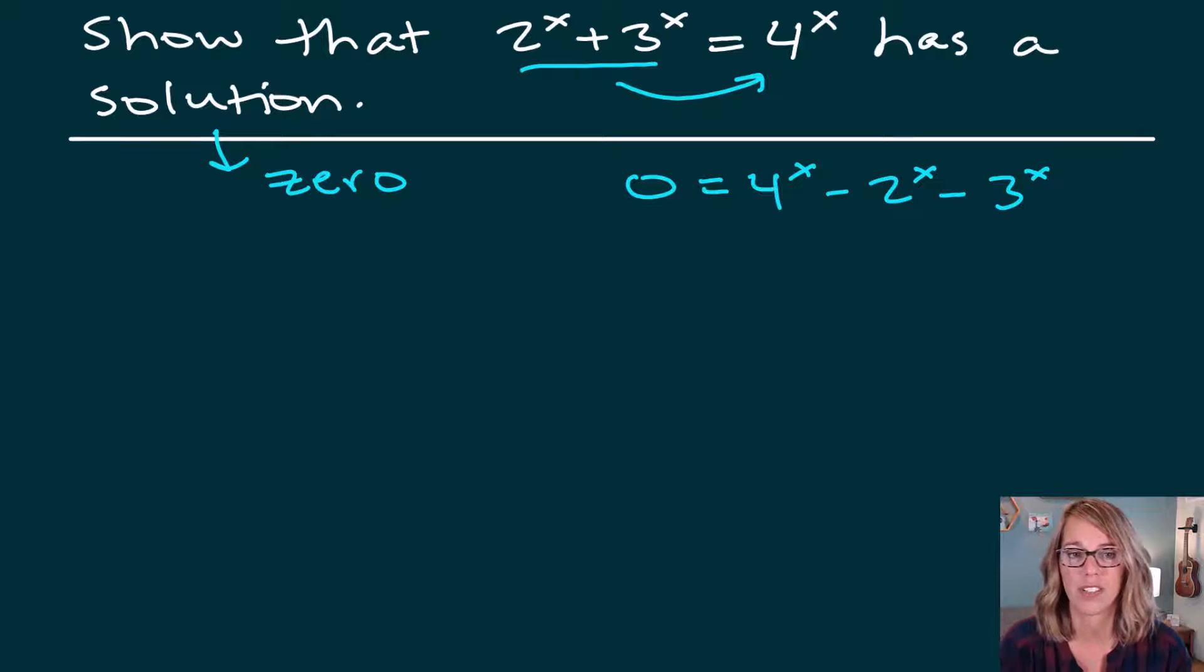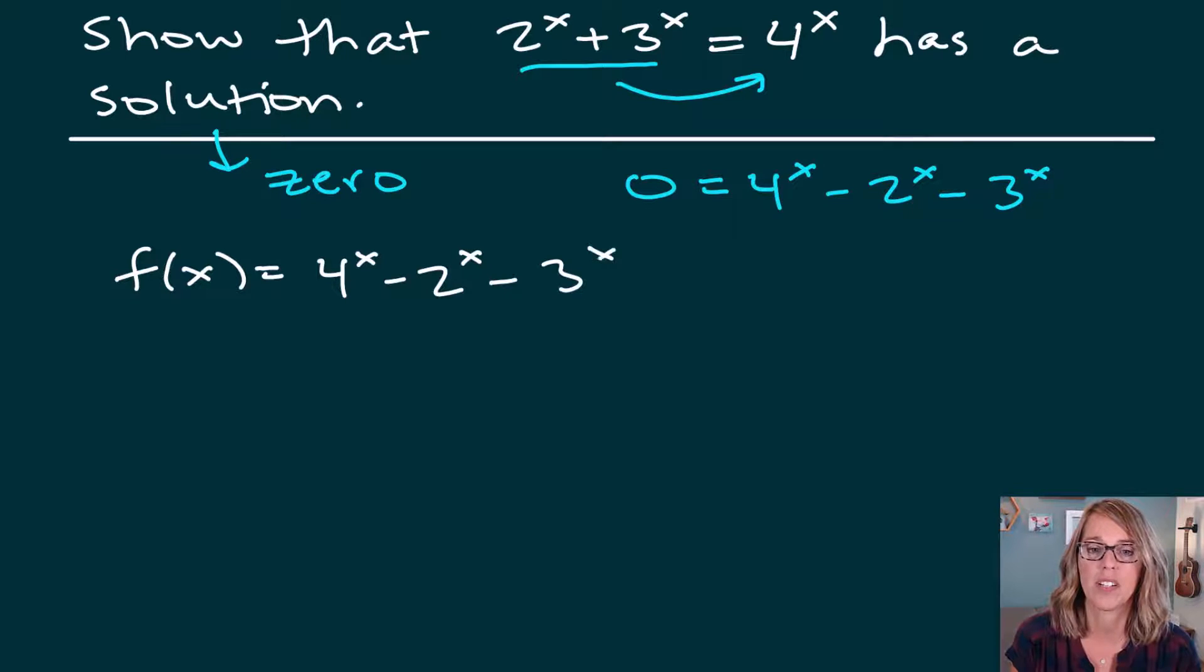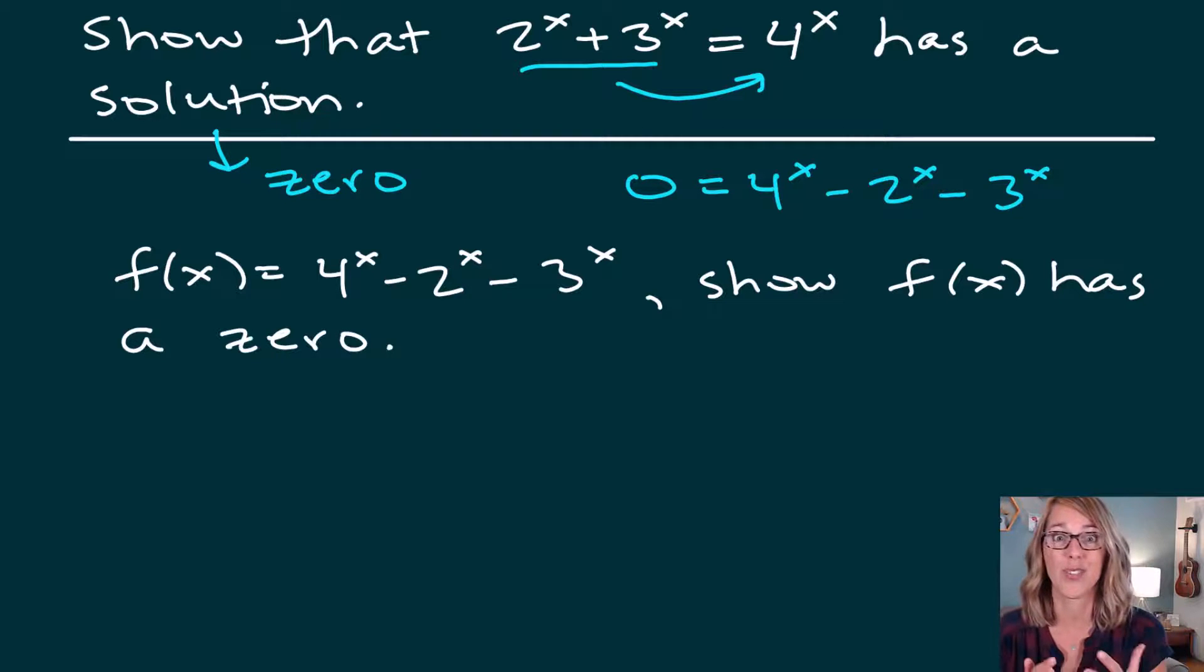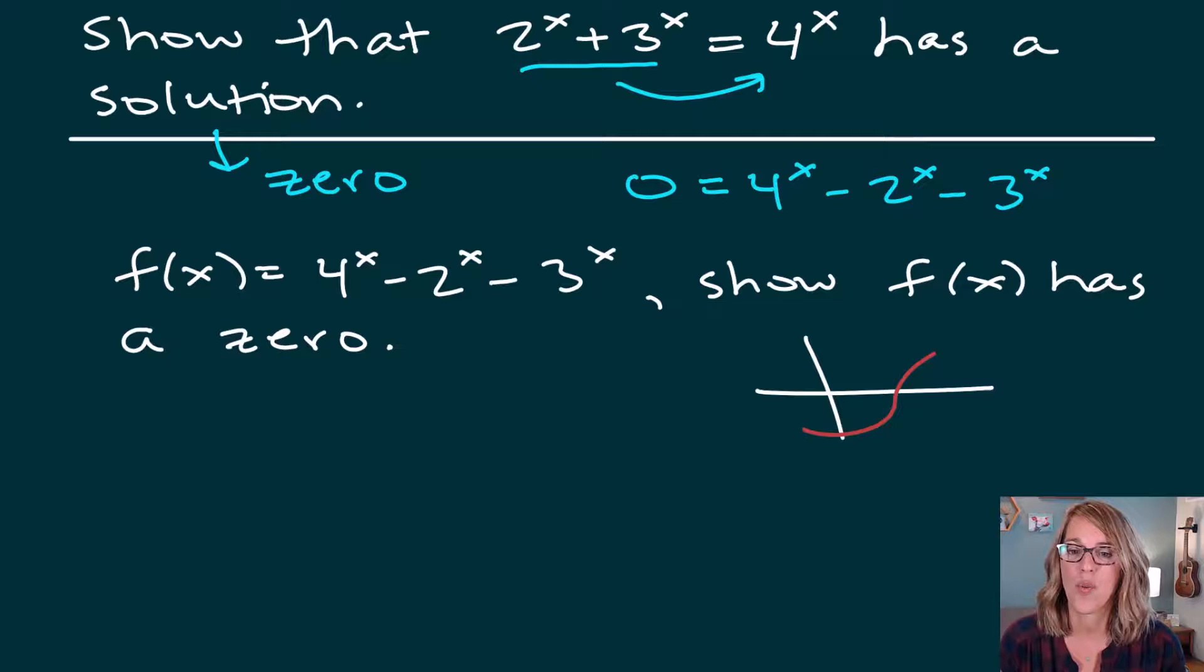I'm going to call this my function. So I'm going to say f of x is four to the x minus two to the x minus three to the x. Now we need to show that f of x has a zero, has a zero or an x intercept. So much easier. That means if it has a zero, I need a y value to be negative, and I need a y value to be positive. And then I can say, I've got a negative and a positive. It has to cross through, and I've got a zero.